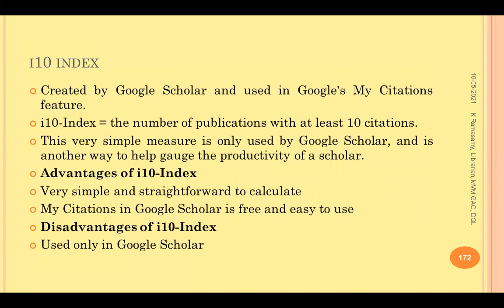I10-index is a scheme created by Google Scholar, available in Google Scholar's 'My Citations' feature. If your I10-index is 6, it means 6 of your papers have received at least 10 citations each. The advantage is it is very simple, straightforward to calculate, and Google Scholar is free. The disadvantage is it is only available in Google Scholar, and accreditation agencies like NAAC may not accept I10-index as a measure of individual research performance.